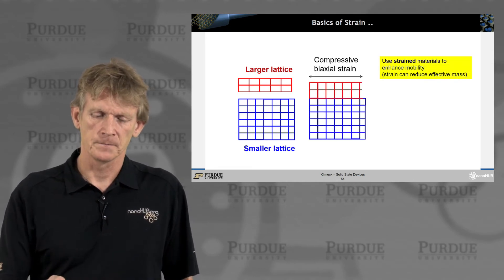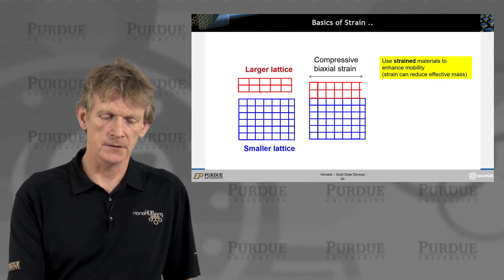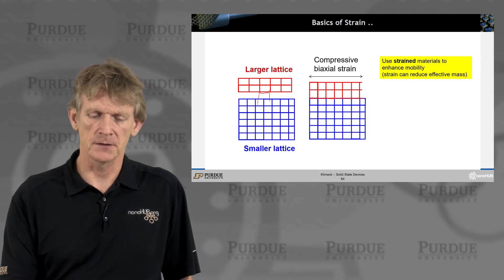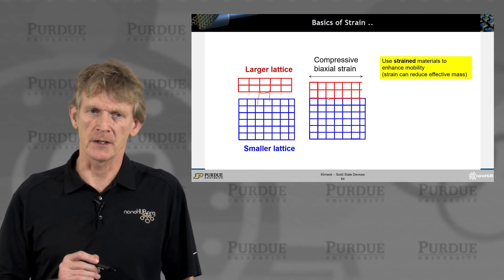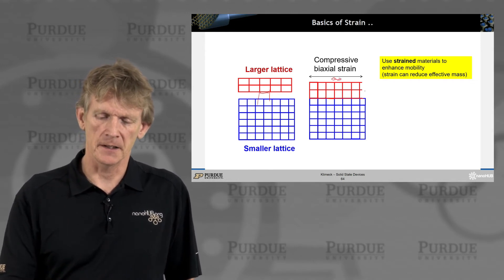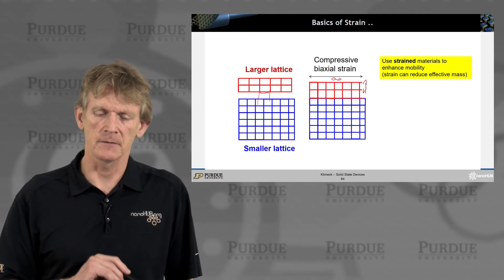So they, in this case here, you see this lattice constant here is larger than this. So now they have to adjust themselves here, and you have biaxial strain. So they are compressed in this direction, and they expand into this direction then.